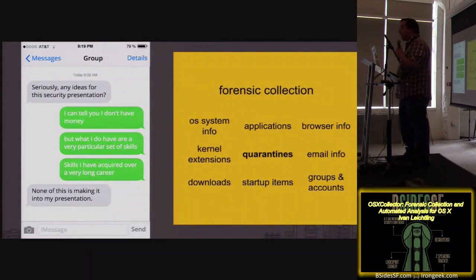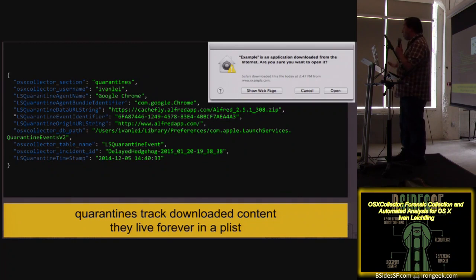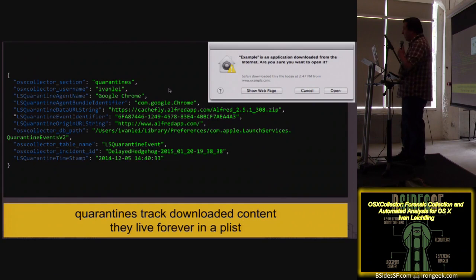Quarantines are really cool for looking at how infections happened on a machine. Quarantines are basically that thing that gives the OS enough information to say 'you downloaded Firefox from the internet, are you sure that's okay?' It turns out these are useful because they track all of the downloads you made from the internet that resulted in someone trying to launch a program. A simple example: Google Chrome downloaded Alfred at a given timestamp. So if you're trying to figure out how a weird DMG got onto the machine, it's in the quarantines — converted from plist to JSON.